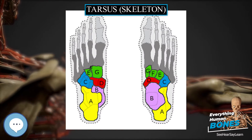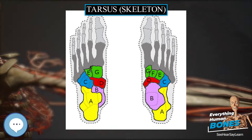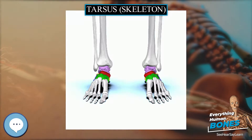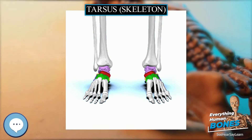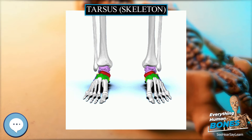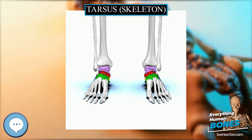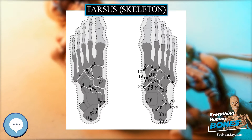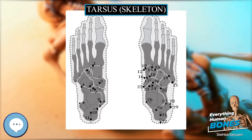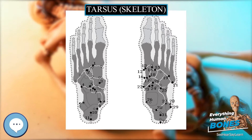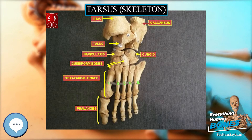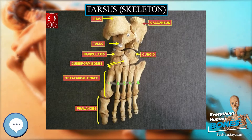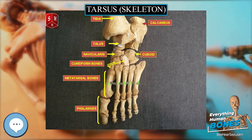Tarsus skeleton. The tarsus is a cluster of seven articulating bones in each foot, situated between the lower end of the tibia and fibula of the lower leg and the metatarsus. It is made up of the midfoot — cuboid, medial, intermediate, and lateral cuneiform, and navicular — and hindfoot — talus and calcaneus.